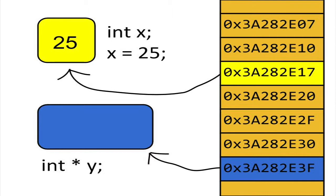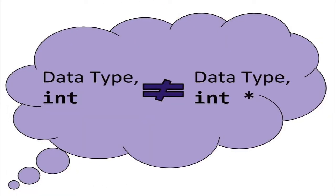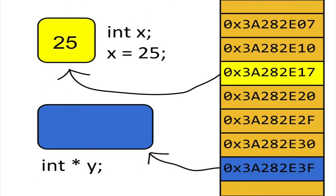Note that the data type of y is not int. The asterisk symbol tells us that y is not of int, but a pointer to an int. In other words, the data type of y is pointer to int.